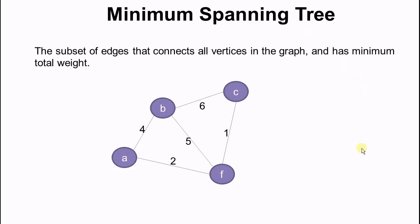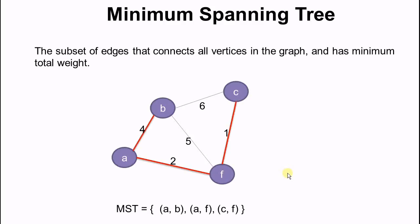What is a minimum spanning tree? Say this is the graph that we have. It has a bunch of vertices and a bunch of edges, and each edge has a weight. The minimum spanning tree is a subset of edges that connects all the vertices in the graph and has minimum total weight. So in this case, the minimum spanning tree is CF, AF, and AB, because they connect all the vertices in the graph and have the minimum total weight.